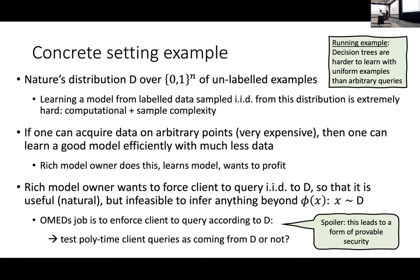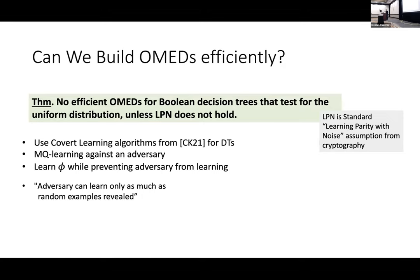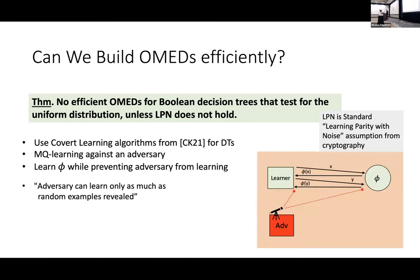To recap, the OMAD's job is to enforce this situation. The natural question is: can we build these OMADs efficiently? One of the main results of this work is that for some cases the answer is no. One theorem states that you can't build an efficient OMAD for Boolean decision trees of polynomial size when the natural distribution is the uniform distribution, under the cryptographic assumption of learning parity with noise with sub-exponential security.